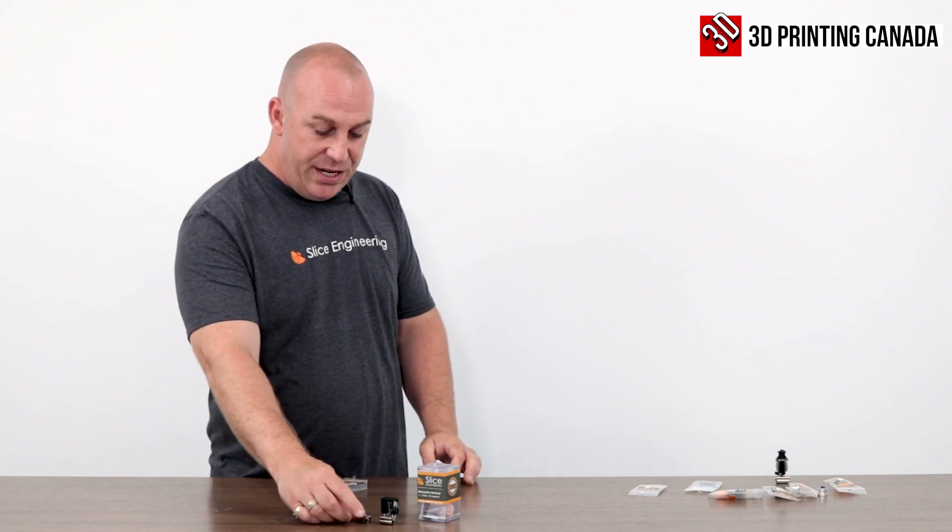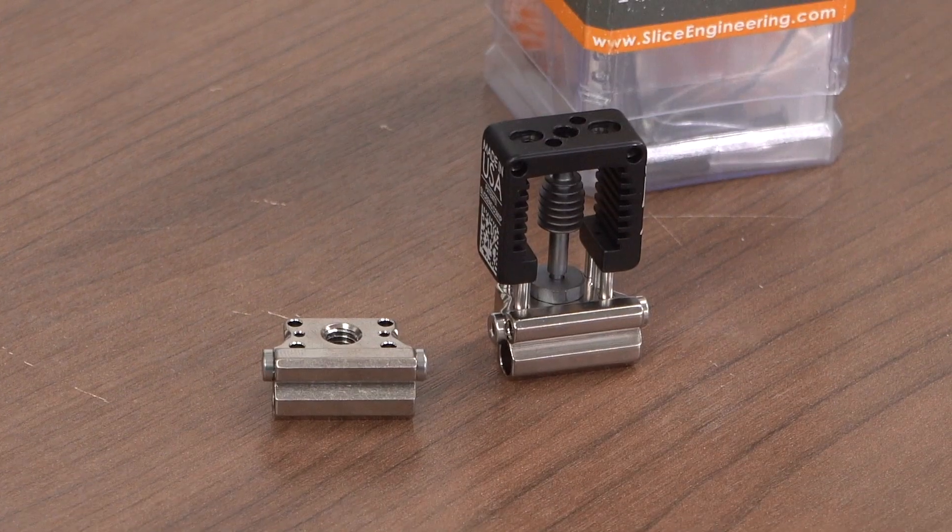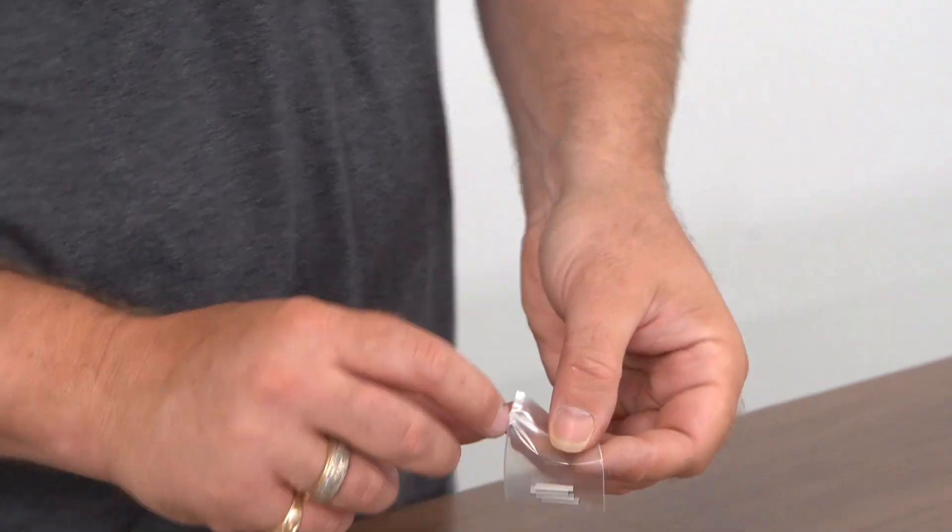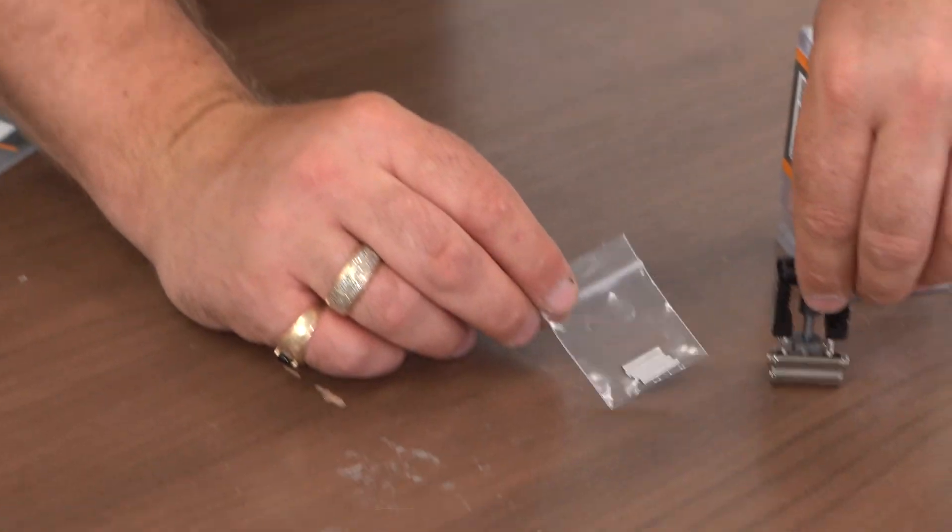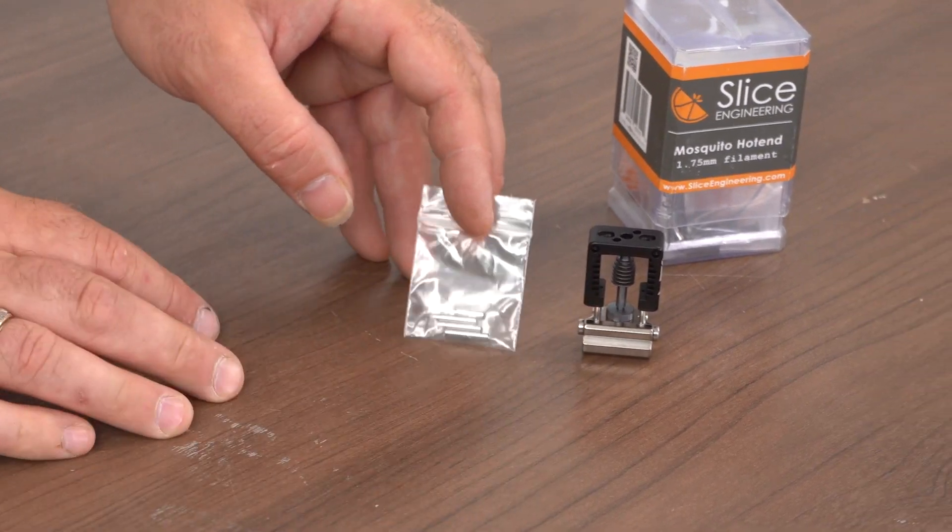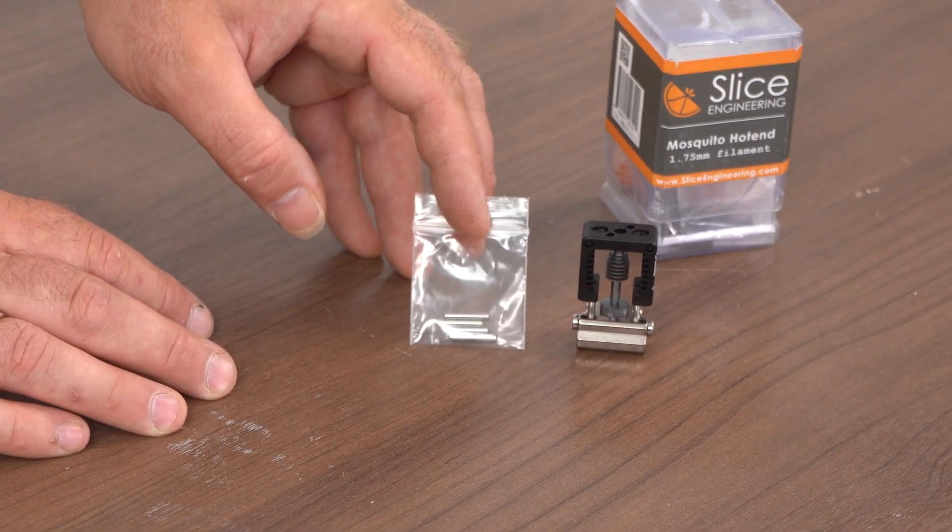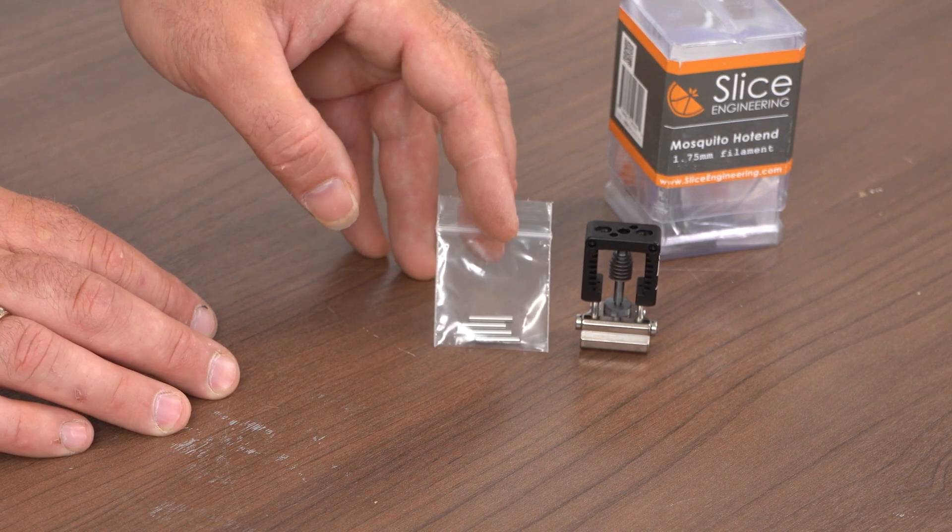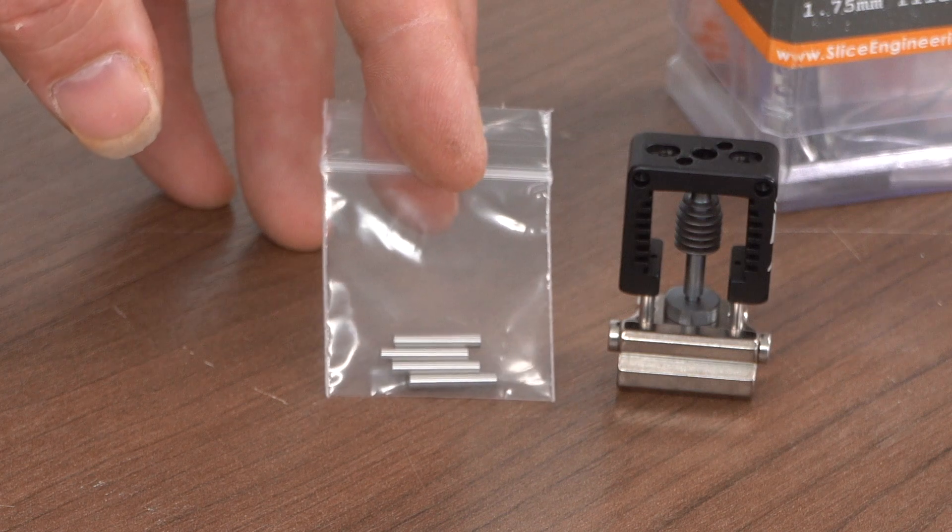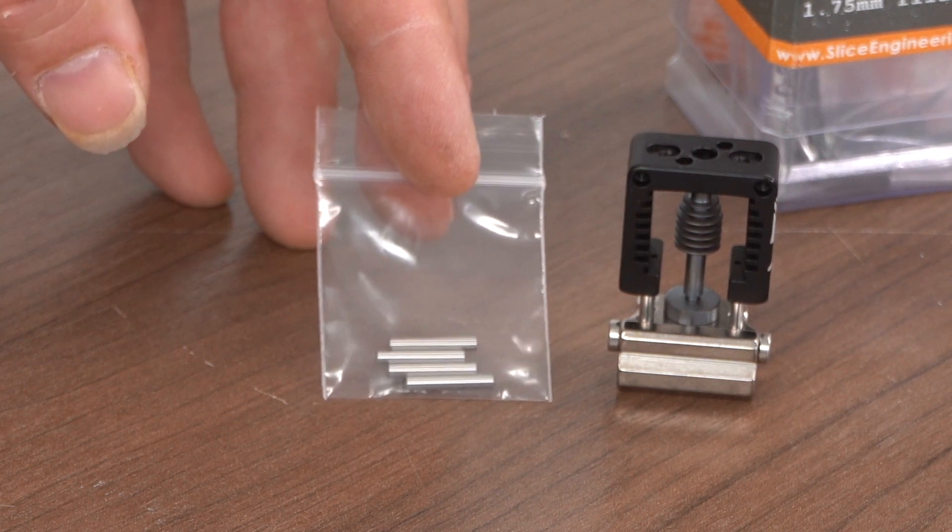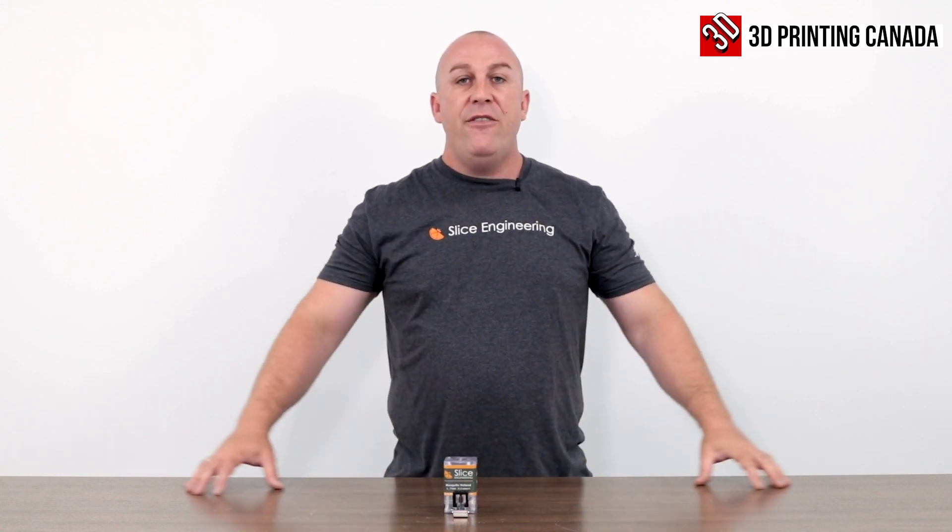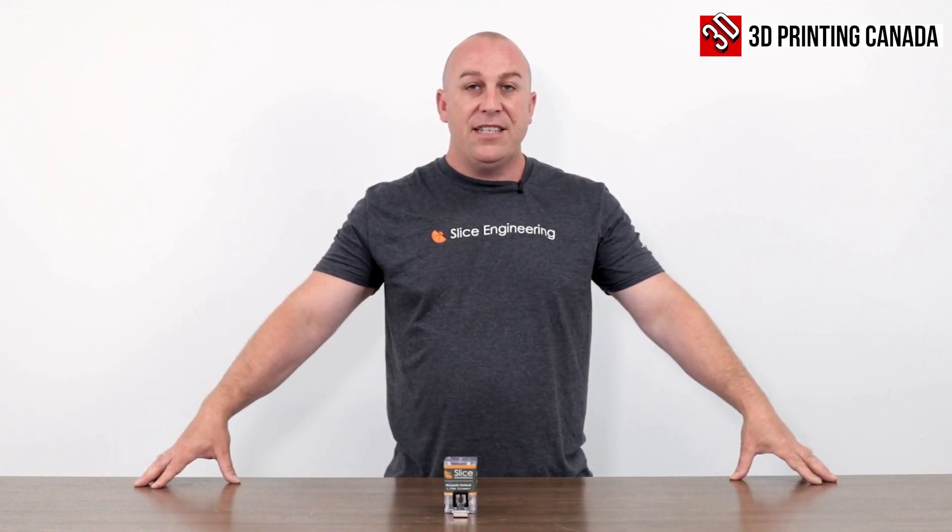Also if you've ever had an explosion, we also carry the hot blocks. You can purchase the little aluminum standoffs here if you happen to bend them or something happens in the future. I haven't had any problems so you should be okay. But if you do damage them, we carry them. That's everything that we carry for the Mosquito as of this moment.